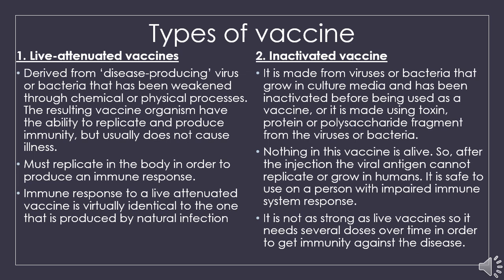Live attenuated vaccines are derived from bacteria that have been weakened through chemical or physical processes. This weakened pathogen is introduced to the body where it is allowed to replicate, and the body will produce an immune response against it without causing any illness. The immune response to a live attenuated vaccine is virtually identical to the one produced by natural infection.